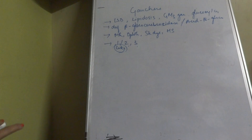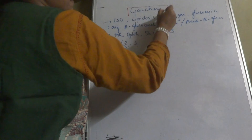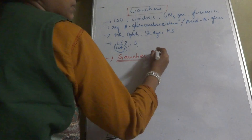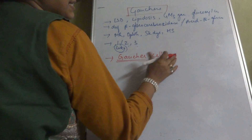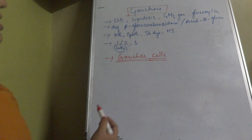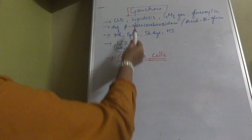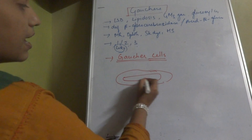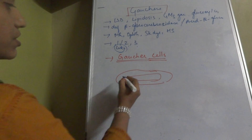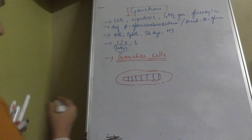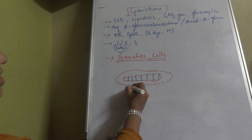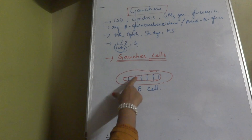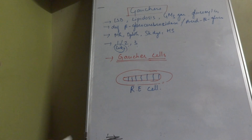The name Gaucher's disease is important because of the Gaucher cells. Since beta-glucocerebrosidase does not allow breakdown of the lipid, it accumulates in reticular endothelial cells in a rod-like form with striations. These lipid-laden reticular endothelial cells are called Gaucher cells.